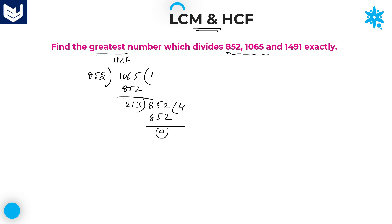Reminder is zero. And HCF of these two is 213. Why? Because you are getting the remainder by dividing with 213. But this is not your final answer. You have to take this value and the third value. 213 and the third number is 1491.